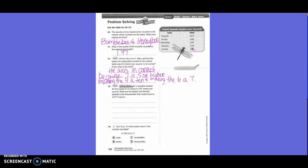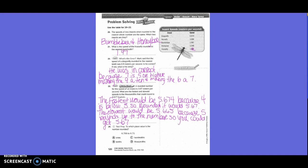Number 27, write math. A rounded number for the speed of an insect is 5 and 67 hundredths meters per second. What is the fastest and slowest speed to the thousandths that could round to 5 and 67 hundredths? The fastest would be 5 and 674 thousandths because 4 is below 5, so rounded it would be 5 and 67 hundredths. The slowest would be 5 and 665 thousandths because 5 rounds up the number, so you could still get 5 and 67 hundredths.